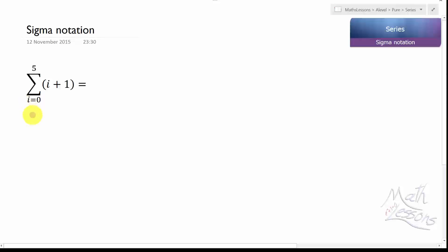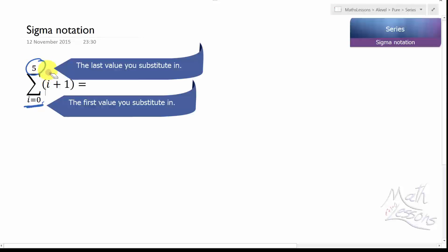We start off by looking at different values of i from 0 to 5 and they go up by one each time. So this tells us the starting value and this tells us the finishing value. And what we're going to do is put each of them into this and then add them all up.